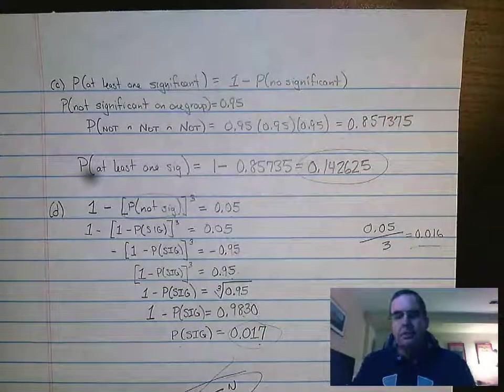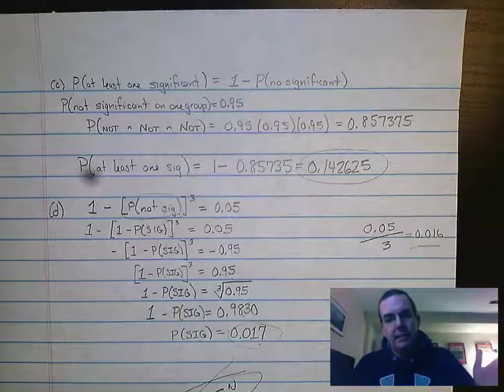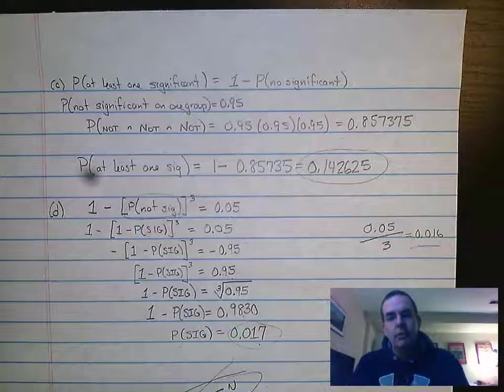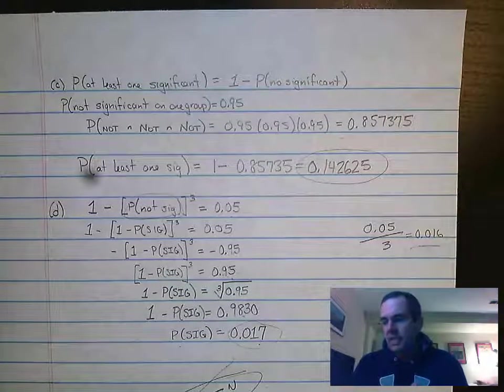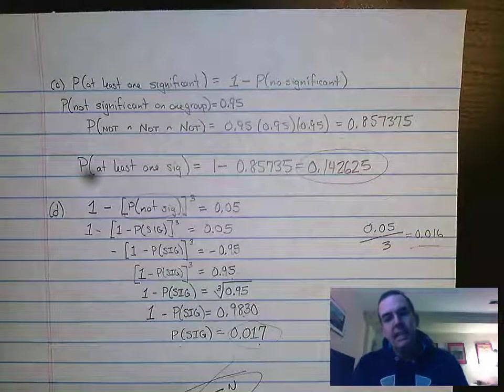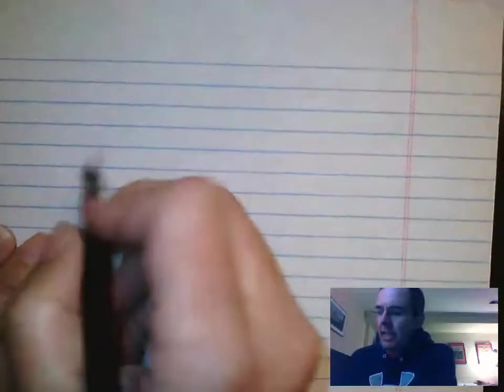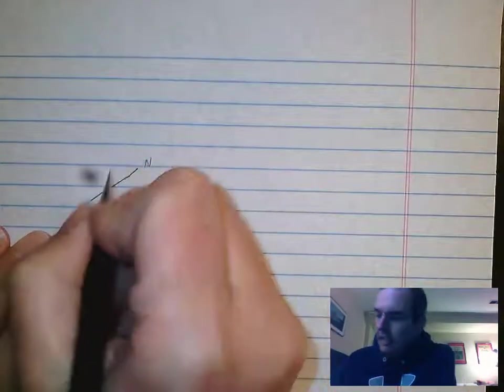Part C asks us to expand this to all three t-tests that I need to run. What this is doing is taking that tree and adding an extra set of branches to it. Let me draw what I mean. We're saying the first test is not significant, and that's 95 percent of the time, or it's significant, which is five percent of the time.